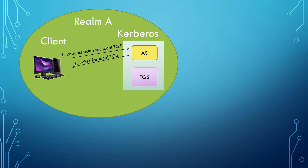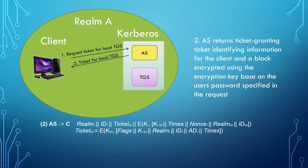The AS returns a ticket granting ticket with identifying information for the client, and a block encrypted using the encryption key based on the user's password specified in the request.